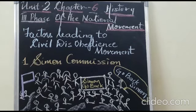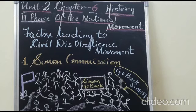In our last unit, Chapter 6, the third phase of the National Movement — Mahatma Gandhiji — we saw the three major incidents which led Gandhiji to launch the Non-Cooperation Movement. We saw the Rowlatt Act, which was passed by Justice Sidney Rowlatt in 1919, the Jallianwala Bagh massacre which took place on April 13th, 1919, followed by the Khilafat Movement.